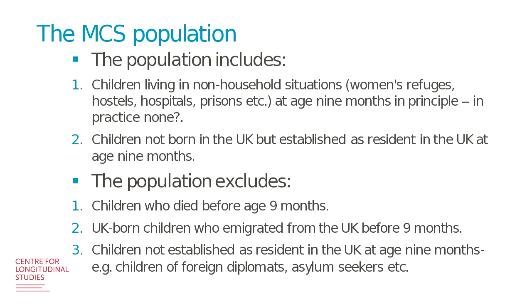The population also covers children not born in the UK but established as residents in the UK at the age of nine months. However, the population excludes children who died before age nine months and UK-born children who emigrated before nine months. Any respondents or children who have left the country will no longer be eligible, as MCS doesn't follow people abroad. Children who were not established as residents at age nine months were also excluded — this might include children of foreign diplomats, asylum seekers, and so on.